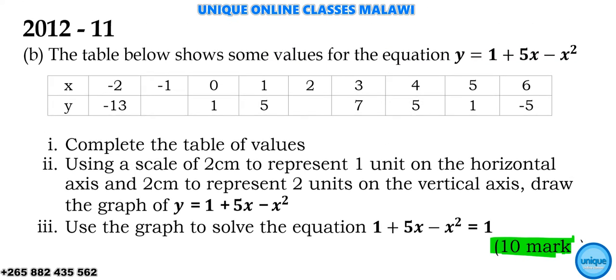So the question reads: the table below shows some values of the equation y is equal to 1 plus 5x minus x squared. This is the table, and we should complete the table values. After completing the table values, we should use a scale of two centimeters to represent one unit on the horizontal axis and two centimeters to represent two units on the vertical axis, and draw the graph of this equation. After doing the graph, we should solve the equation using the graph.